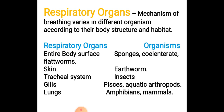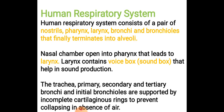In amphibians and mammals, lungs are found. In amphibians, both gills and lungs are present as respiratory organs because they show a dual mode of living — they can live in both water and on land. When they are in water they use gills, and when they are on land they use lungs for respiration.